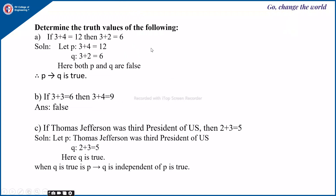Next, we need to determine the truth values of the following. First: if 3 plus 4 is 12, then 3 plus 2 is equal to 6. Let p be '3 plus 4 is 12' and q be '3 plus 2 is equal to 6'. Here both p and q are false — 3 plus 4 is not 12 and 3 plus 2 is not 6. Therefore p implies q is true.